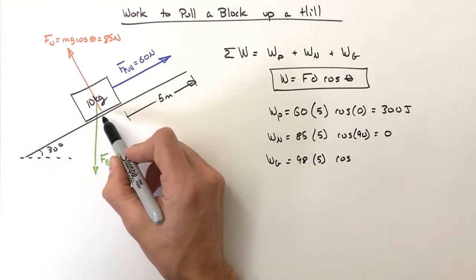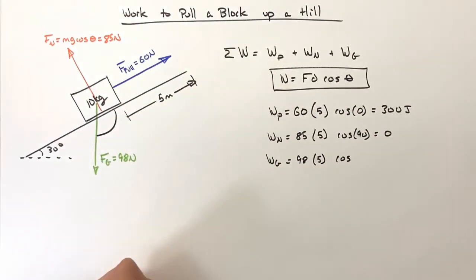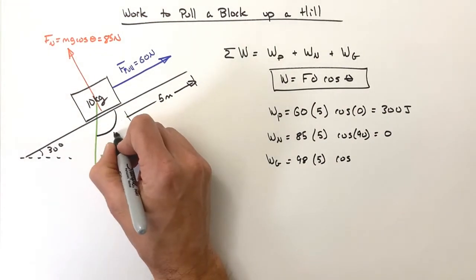That is the angle between up the hill and straight down, or this angle right here - well this is 120 degrees.